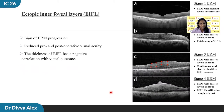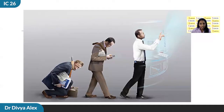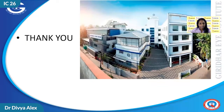Coming to EIFL, or ectopic inner foveal layers, it is a sign of ERM progression. In stage 1 ERM, there is normal foveal architecture with ERM. In stage 2, the foveal contour is lost. But in stage 3, chronic anteroposterior and centripetal traction caused by ERM induces displacement and reorganization of the inner retinal layers, creating a continuous flow of inner retinal tissue extending from the INL and plexiform layer across the central fovea — this is called EIFL, clearly seen in stage 3 ERM. The thickness of the EIFL has a negative correlation with visual outcome. Thank you for the patient listening.